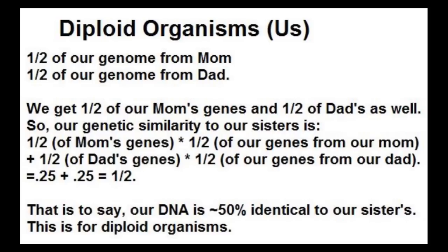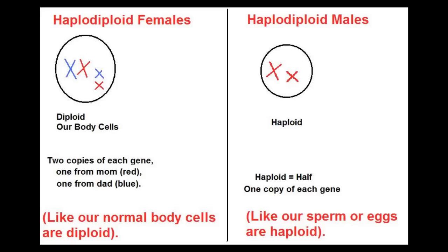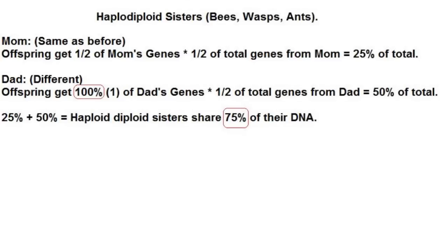Now let's consider a haplodiploid species. Remember, in a haplodiploid species the females are diploid and the males are haploid. Through the mother, it works just like it does for a diploid species, because the mom is female and therefore diploid. In the half of the genome inherited from the mother, about half the alleles will be the same, so a quarter of their total alleles will be the same through their mother. But on the father's side, there's a big difference — the father is male and is haploid.